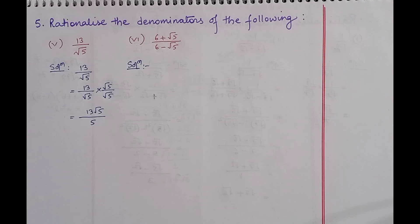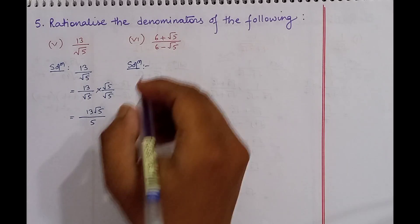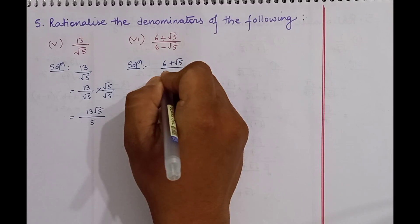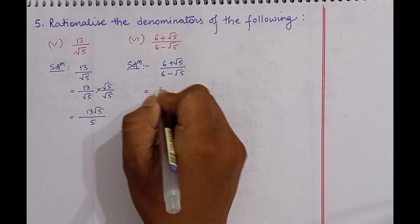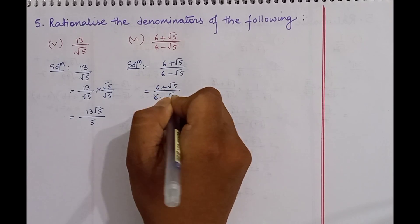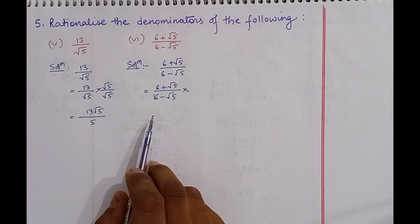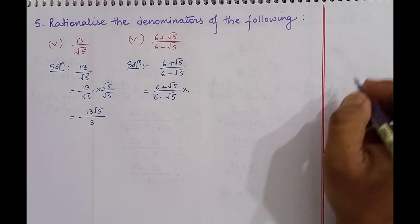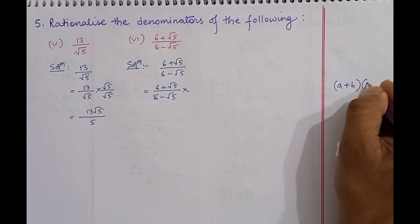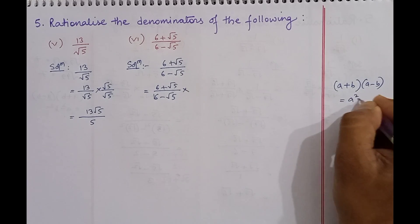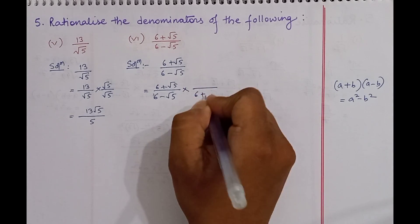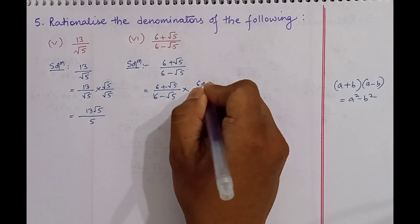Question number 6: 6 plus root over 5 by 6 minus root over 5. In the denominator we have 6 minus root over 5, so in order to express it in the form (a plus b)(a minus b) equals a square minus b square, we'll have to multiply it by 6 plus root over 5 over 6 plus root over 5.